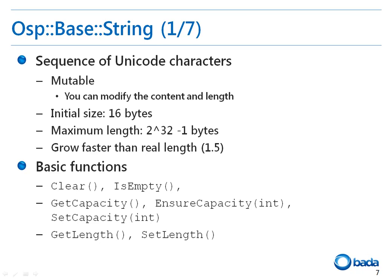The primitive functions provided for the string class include functions to clear the string and to identify whether the string is empty, such as the clear and isEmpty functions. In addition, the getCapacity function can be used to get the size of the allocated memory, and the ensureCapacity and setCapacity functions can be used to set the capacity of a string. Also, the getLength and setLength functions to acquire and set the length of the actual string are also provided.